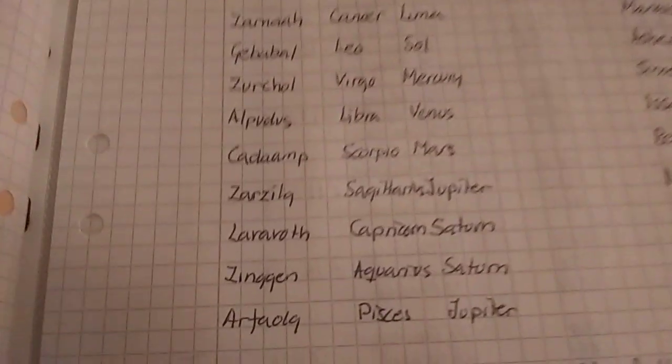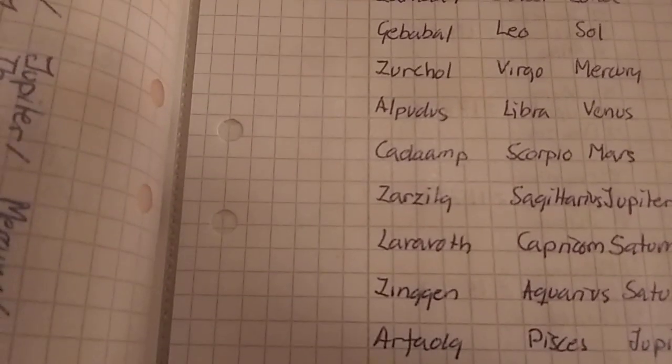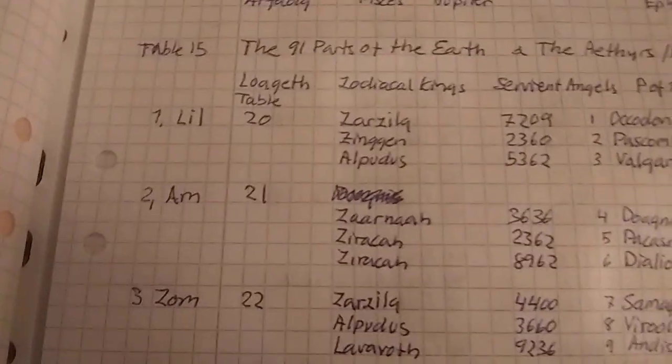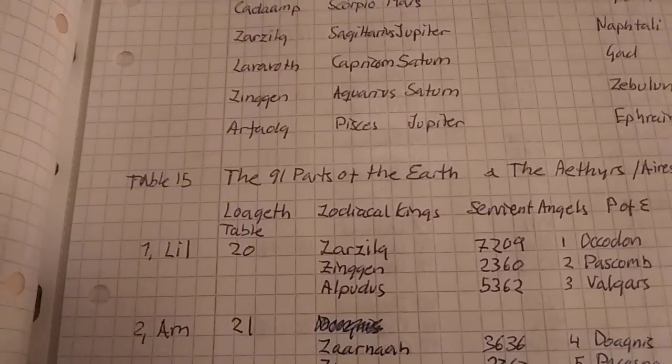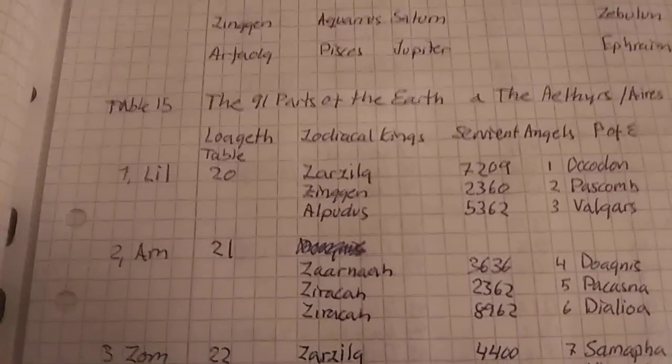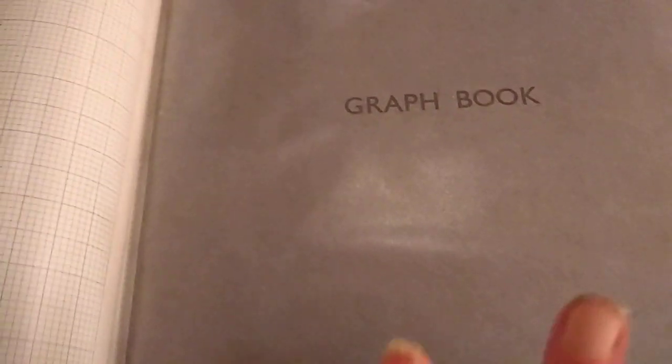Then we also have the heptarchia. Here we have all the angels, princes and all those things. If you want the 90 parts or parts of the earth and angels, here we have the different countries and zodiacal kings and all these names. If you are interested, please let me know and I will take photos of them.